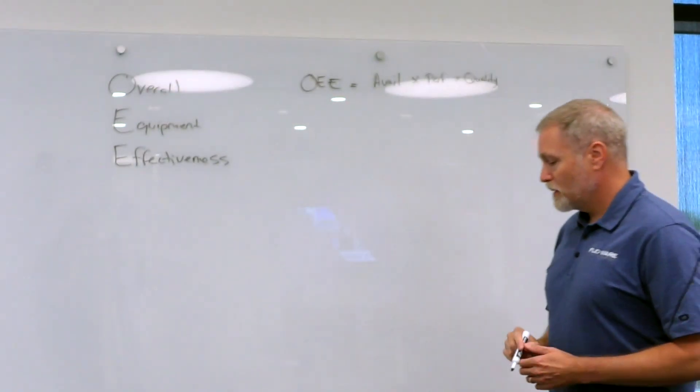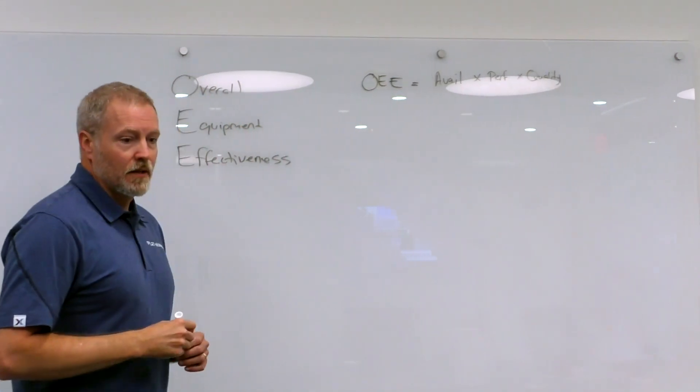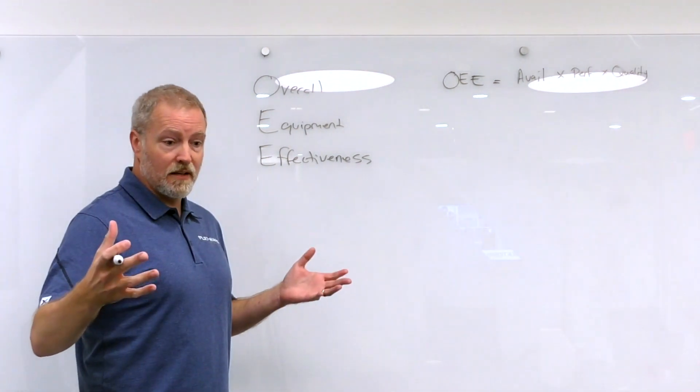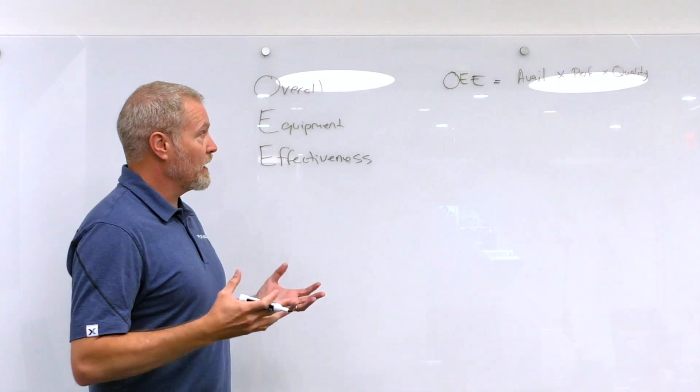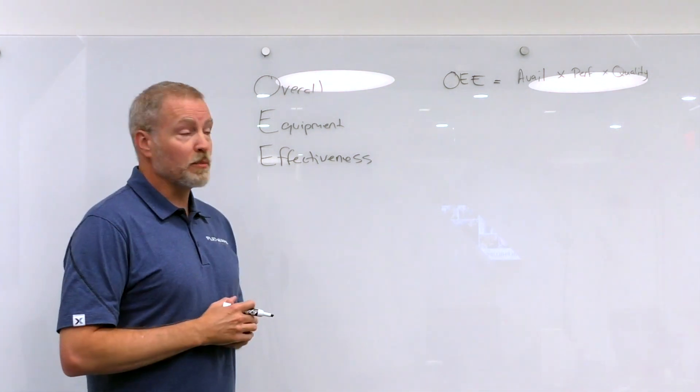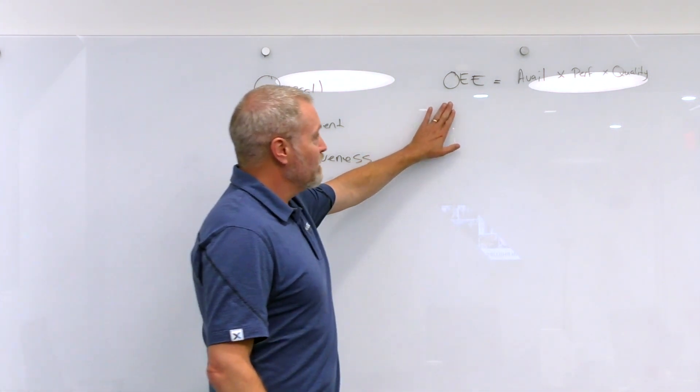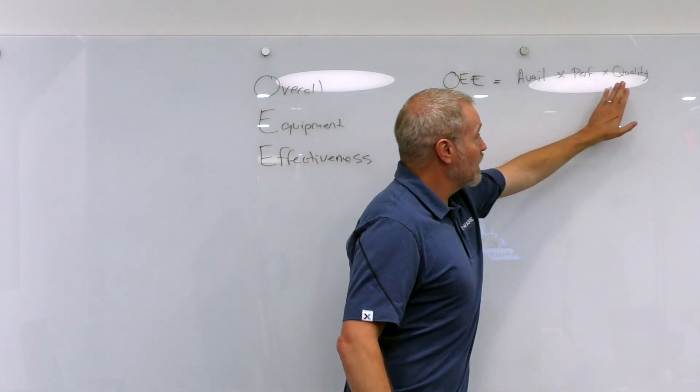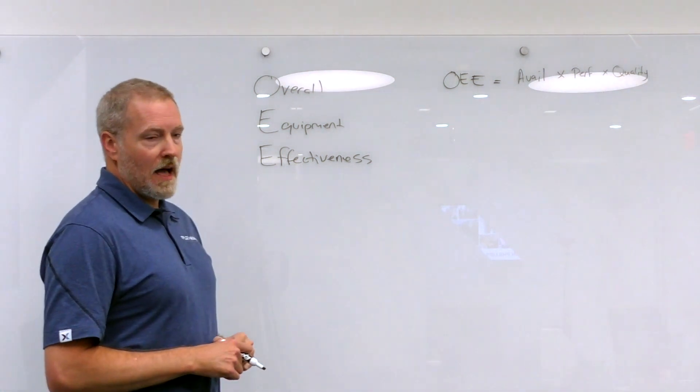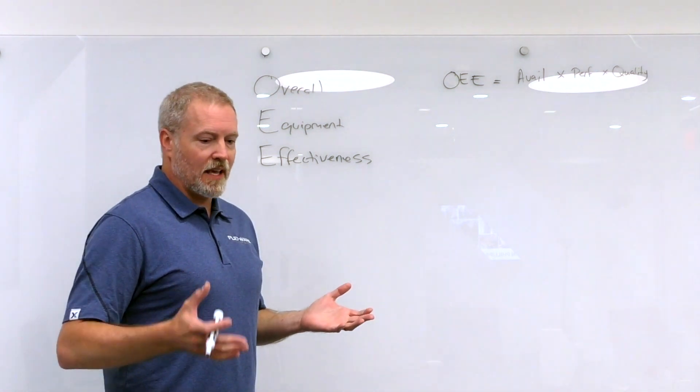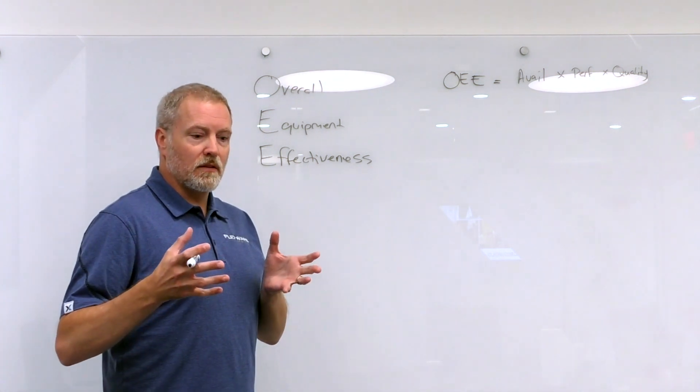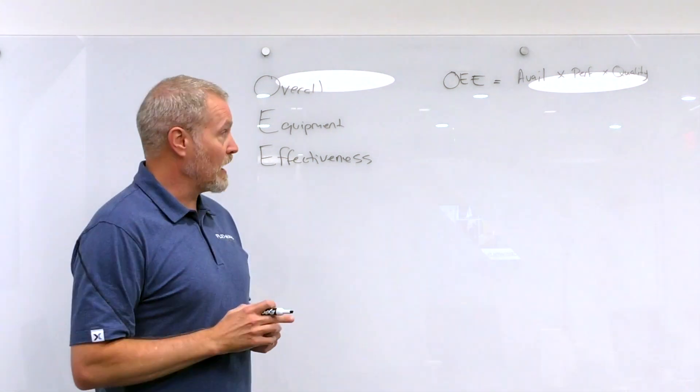Ultimately OEE is measuring the percentage of time that you're running in an ideal state, producing at an ideal rate, producing perfect quality products. It is a percentage, so the ideal score would be 100%. In order to receive an OEE of 100%, you'd have to have an availability of 100%, a performance of 100%, and a quality of 100%. Most people look at this as kind of a cascading definition of losses in your process. The loss is measuring basically the delta between perfect and where you're actually running.